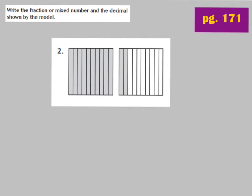Let's look at number 2. We need to write the fraction or mixed number and the decimal shown by the model. Our model is cut into tenths — 1, 2, 3, 4, 5, 6, 7, 8, 9, 10 — and this one is cut into tenths also. We do have 1 whole shaded in. So our fraction is going to be a mixed number. Looking at the second model, we have tenths, but only 2 of them are shaded, so this is 2 tenths. We have 1 whole and 2 tenths as our mixed number.